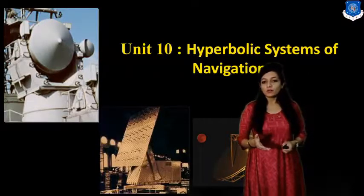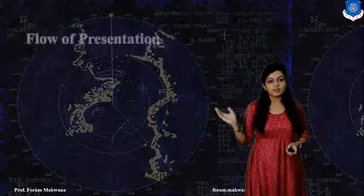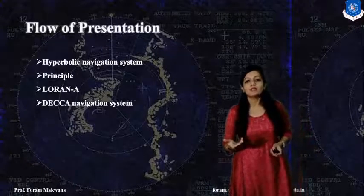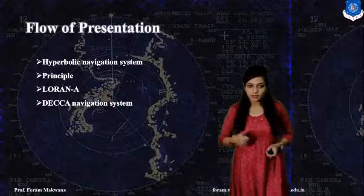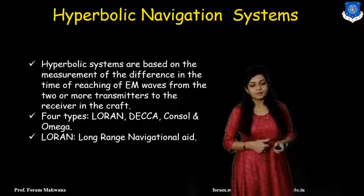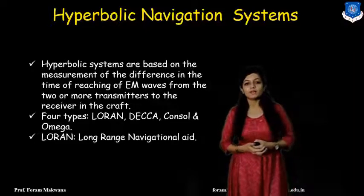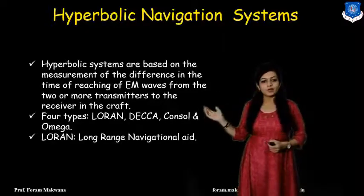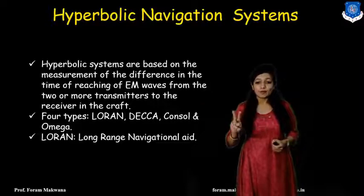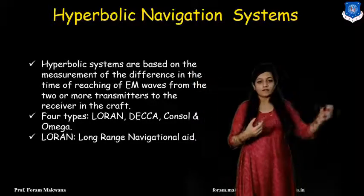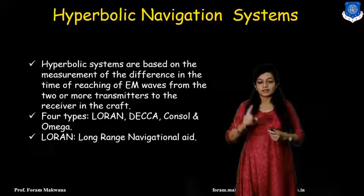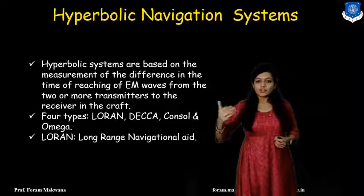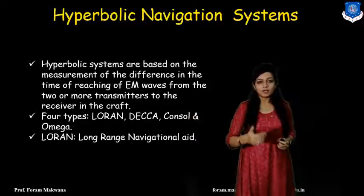First of all, what do you mean by hyperbolic system — we are going to study in this session. The definition of a hyperbolic navigation system: it is basically a measurement of the difference in time of receiving a signal from each and every earth station. There is only one receiver and there are multiple transmitters, and we measure at which time a specific signal is going to arrive.